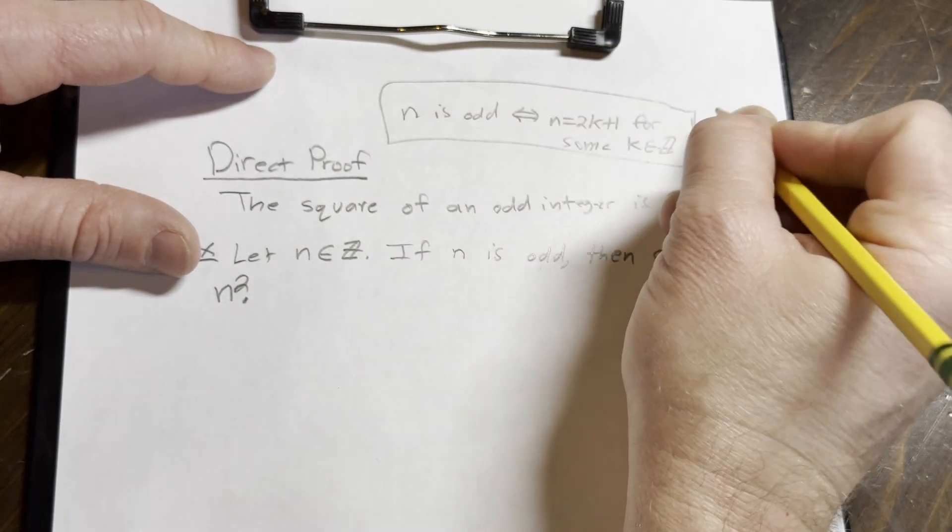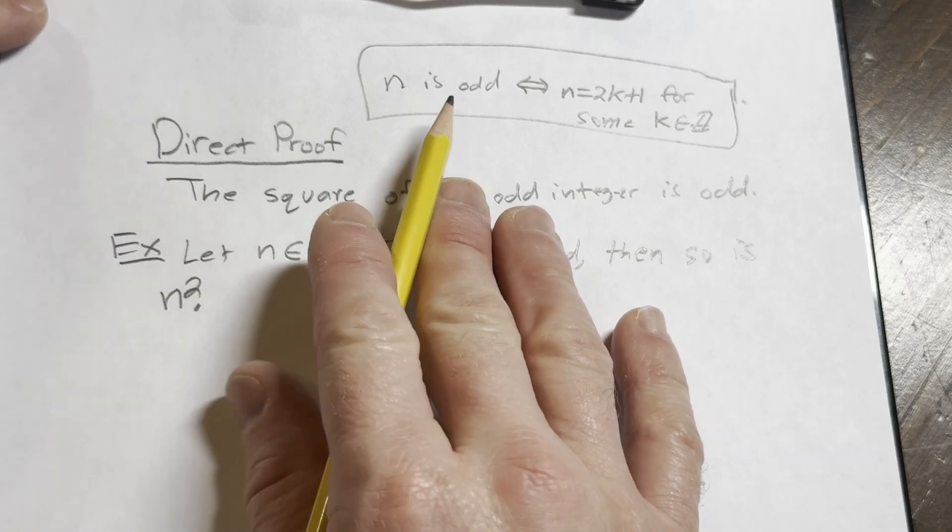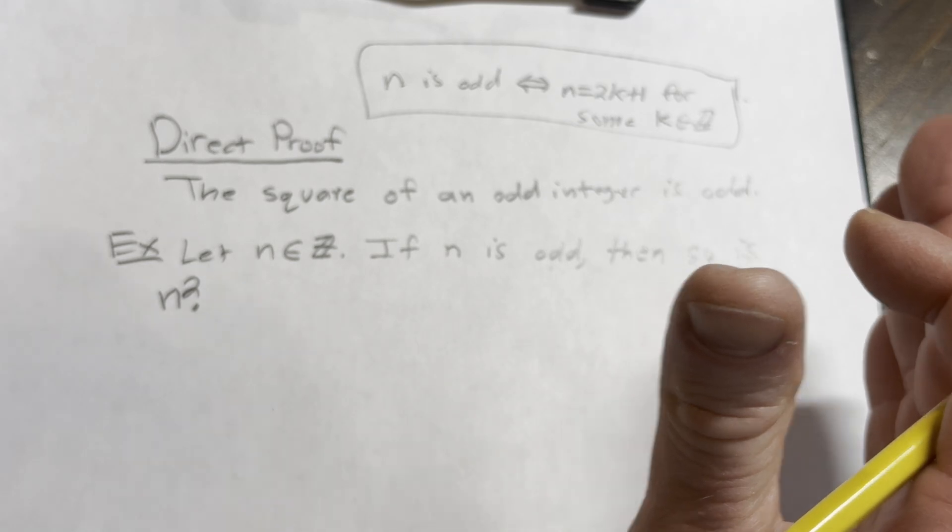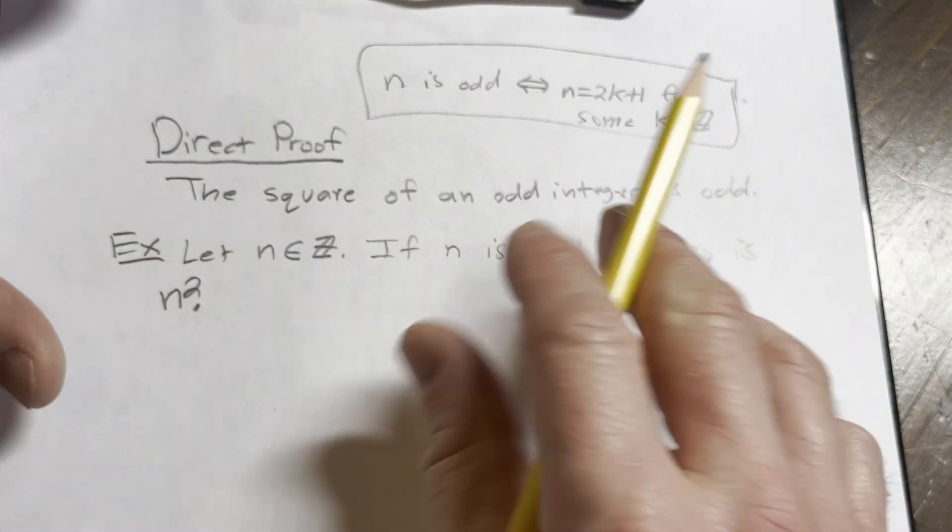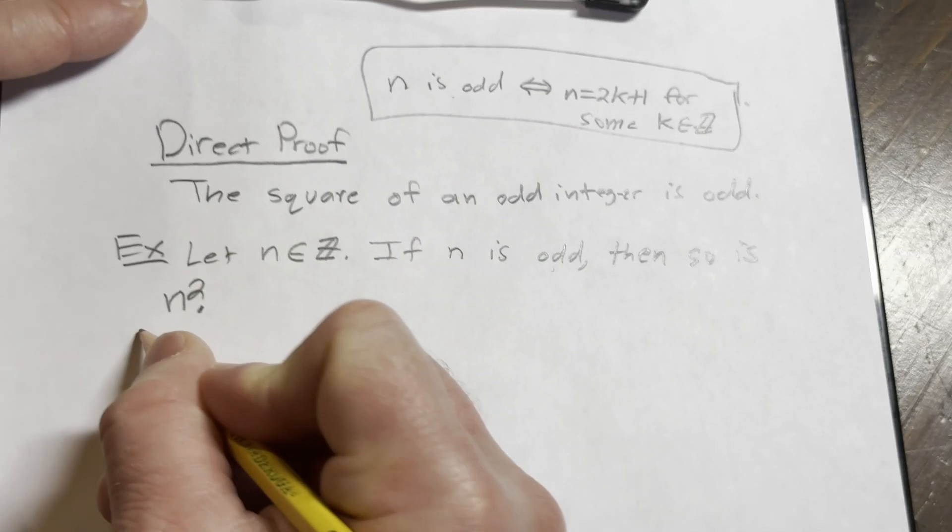Okay, this is going to be our definition of odd that we're going to use in this proof, in this box. N is odd. This is a definition. Remember, all definitions are if and only if statements. It's very, very useful if you're reading a book. So n is odd means this. So let's go ahead and prove it.